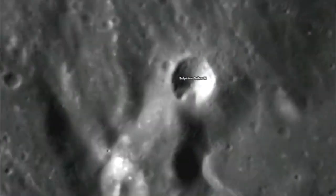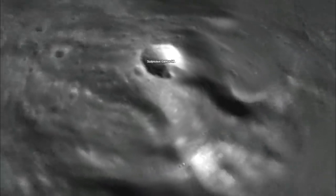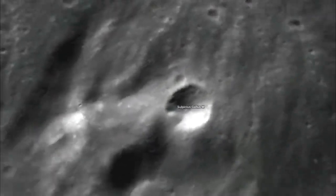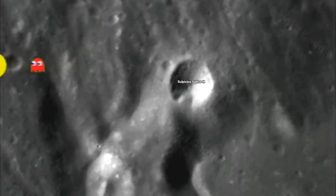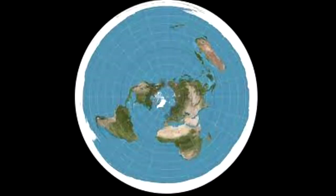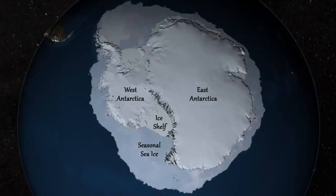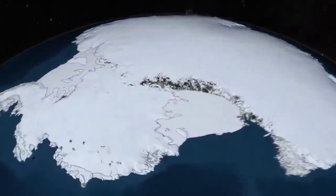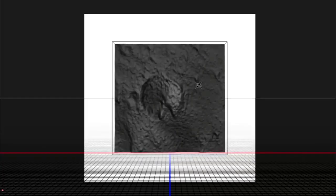As you realize by now, I hope, we are living in a crater on the moon. The moon, of course, is a reflection of the bigger earth. The first map that fitted into the crater was the United Nations map. But then I started to investigate Antarctica.